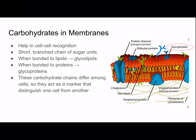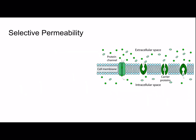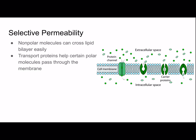Here you can see a glycoprotein — a carbohydrate chain bonded to a protein — and here's one bonded to a lipid. The plasma membrane is selectively permeable. Nonpolar molecules can cross the lipid bilayer easily because the middle portion is nonpolar, but transport proteins help certain polar molecules pass through the membrane.